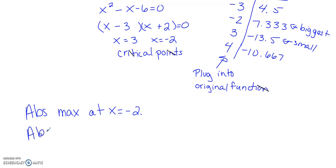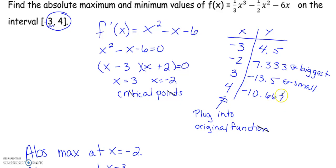We'll end this with absolute min at x equals 3. You only do this, where you make the table, if you're given an interval. I hope this helped.